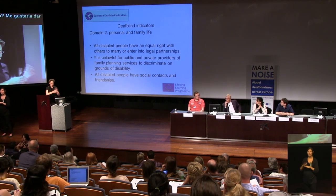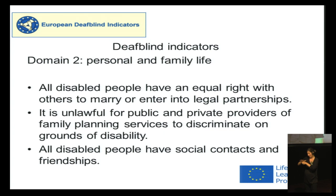So what does that mean? To give an answer, I want to take you into domain two, personal and family life. As I said before, this domain deals with people's participation in social and private life. In the IDEE, there is a whole list of different indicators; I have selected three. One indicator says: all disabled people have an equal right with others to marry or enter into legal partnerships. Another says: it is unlawful for public and private providers of family planning services to discriminate on grounds of disability. Another says: all disabled people have social contacts and friendships. Of course, all these indicators are very meaningful for persons with deafblindness.